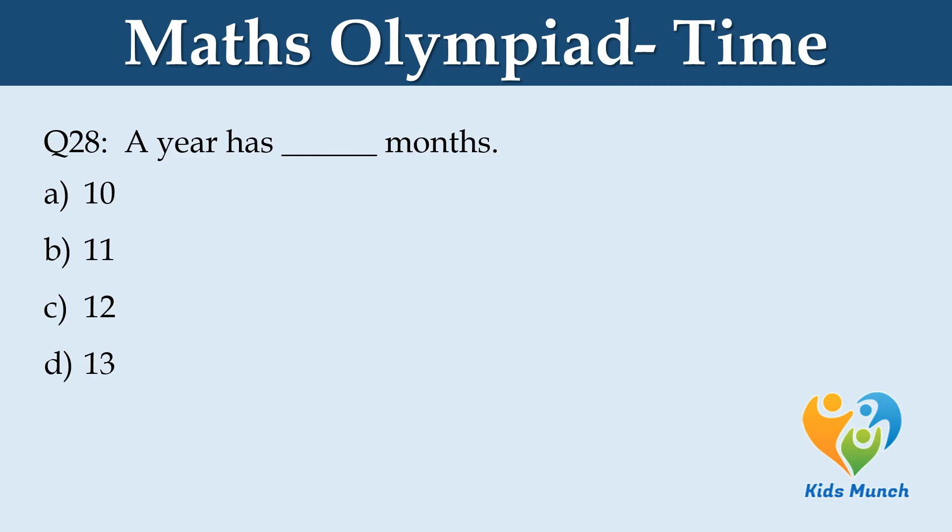A year has dash months. Option A: 10. Option B: 11. Option C: 12. Option D: 13.